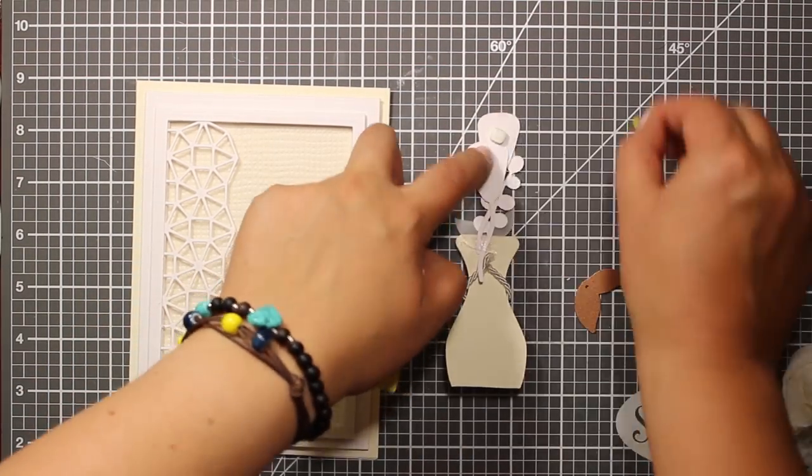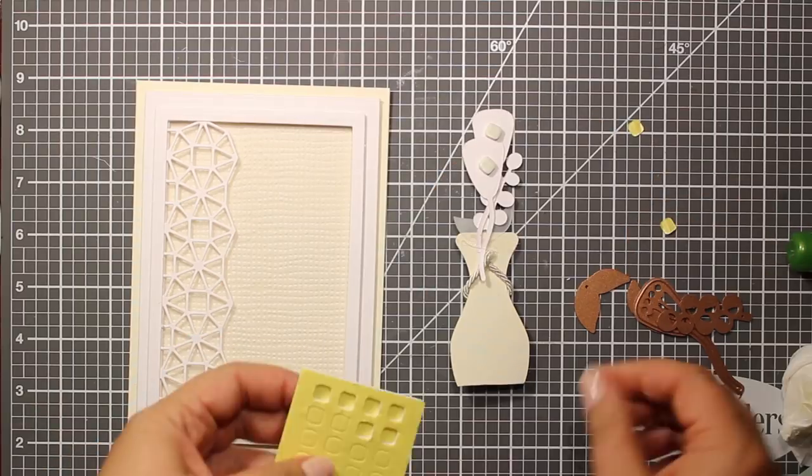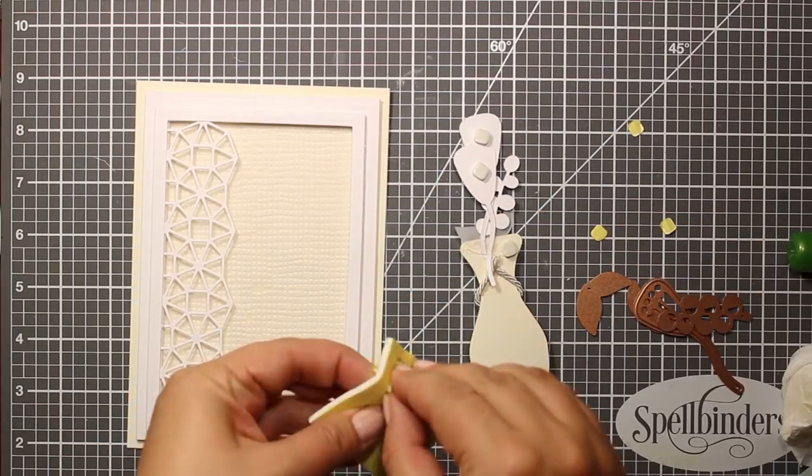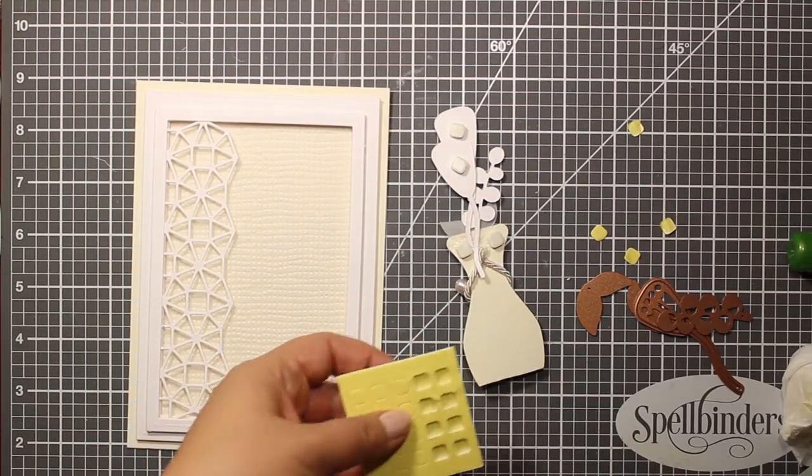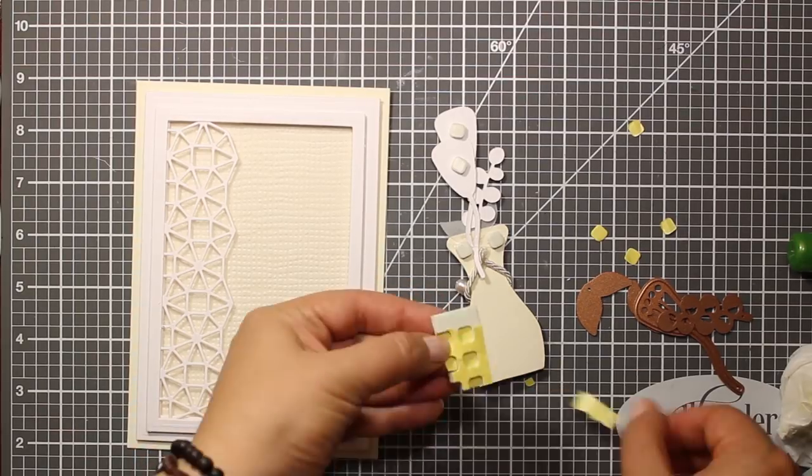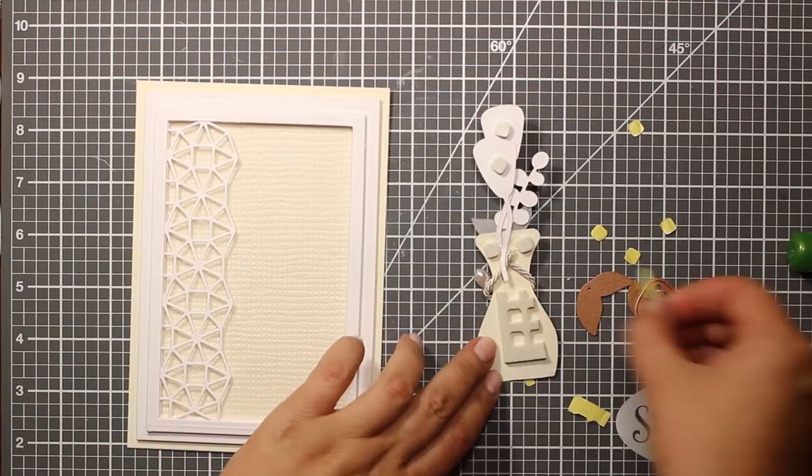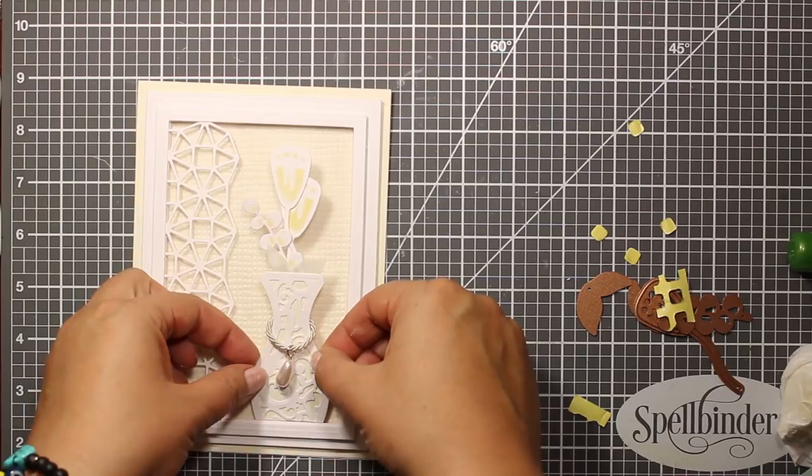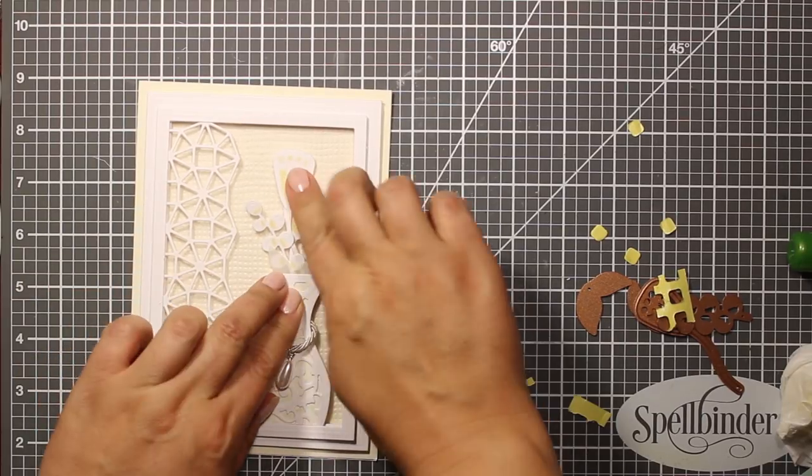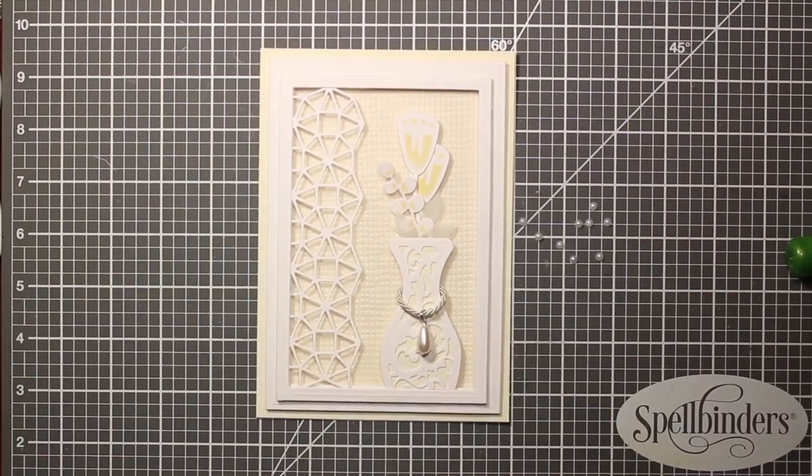I'm going to attach the flowers to the card front with the pop dots. Those pop dots are actually the leftovers from June card kit by Spellbinders. And they are extra thick. You can also use a double layer of foam squares to attach this image.